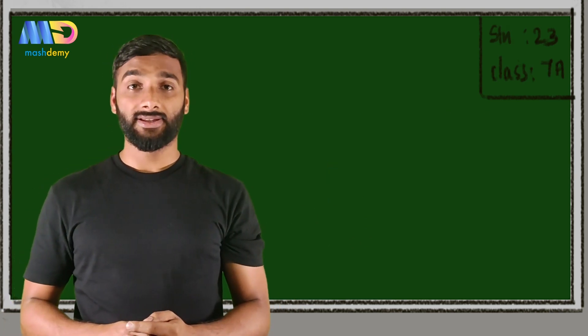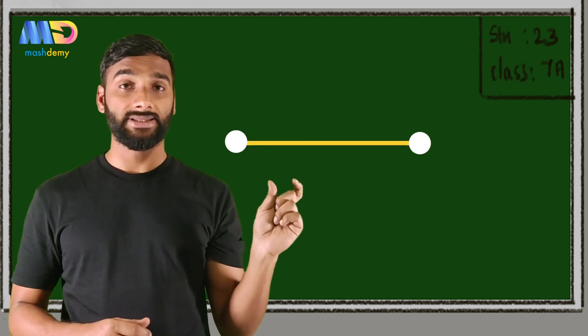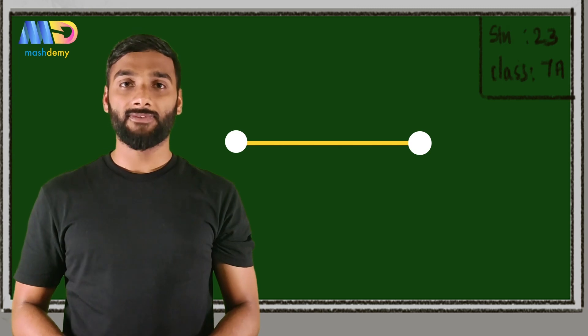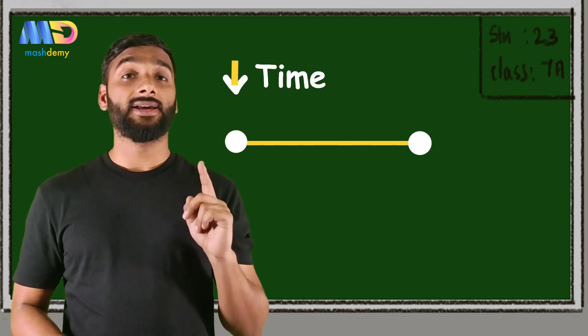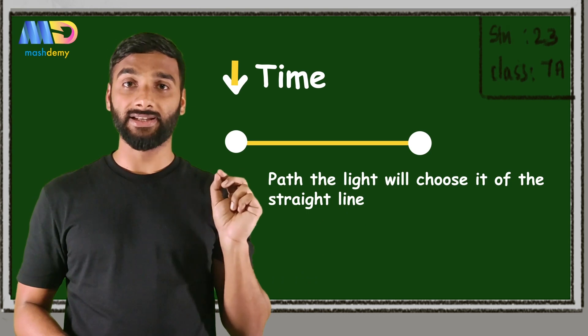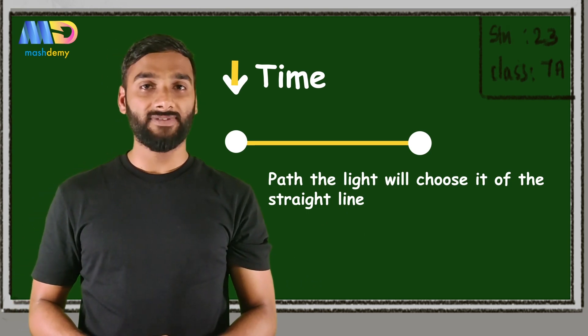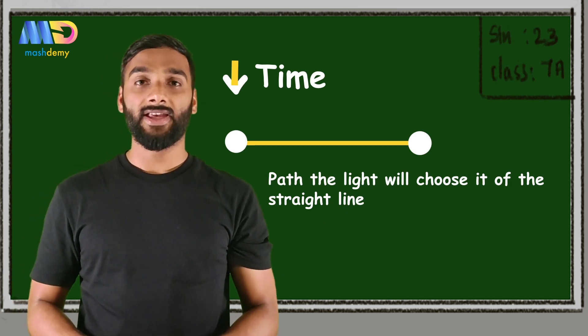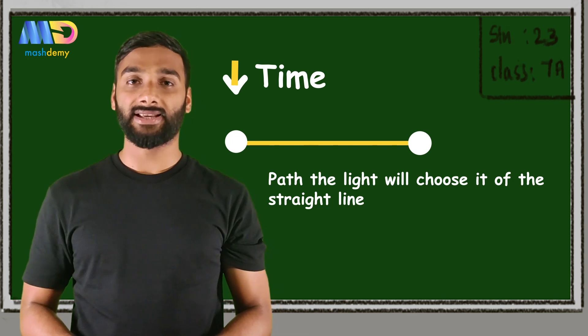Now, as we know, the minimum distance between two points is a straight line. So for minimizing time, light will choose the straight line path. This is the reason light always travels in a straight line while traveling in a single medium.